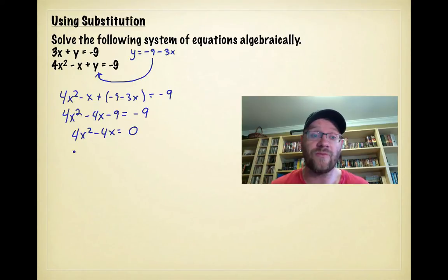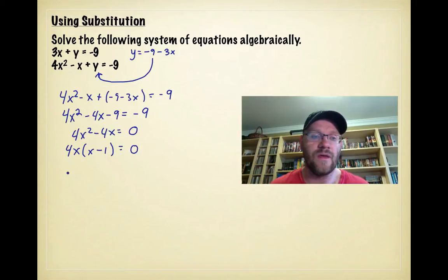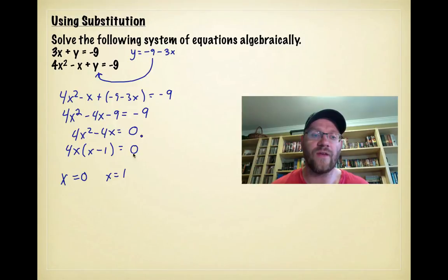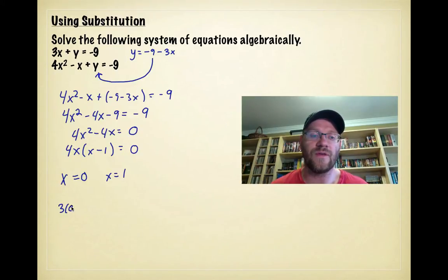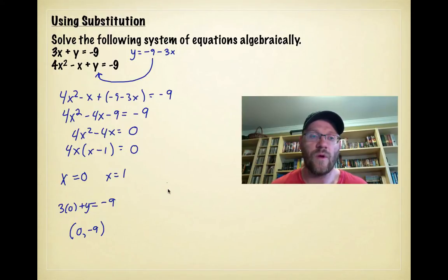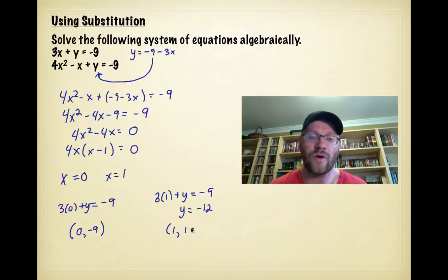To solve this, I factor by removing the greatest common factor, giving 4x(x − 1) = 0. So x = 0 or x = 1. Now I plug both x values into the first equation to find y. When x = 0: 3(0) + y = −9, giving the point (0, −9). When x = 1: 3(1) + y = −9, giving y = −12, so the second point is (1, −12).